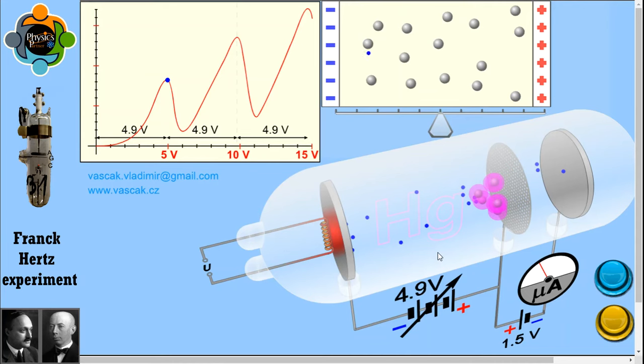The quantum theory stated that electrons in an atom exist in discrete and quantized states. It was observed during the experiment that the current drops suddenly at some specific value. You can see in the graph, again, it was observed during the experiment that the current drops suddenly at some specific value.